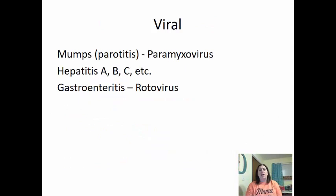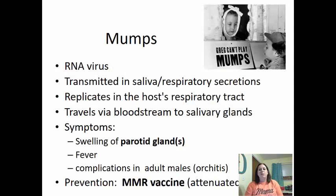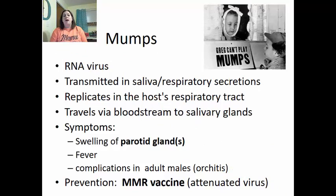Viral digestive system disorders include mumps (also known as parotitis), caused by paramyxovirus; hepatitis A, B, C, and others; and gastroenteritis caused by rotavirus. Mumps is an RNA virus transmitted in saliva and respiratory secretions. It replicates in the host respiratory tract but travels in the bloodstream to the salivary glands. Symptoms include swelling of the parotid glands, fever, and in adult males, the complication of orchitis — inflamed testes. Prevention is the MMR vaccine, which is an attenuated virus.